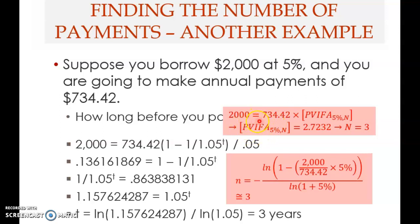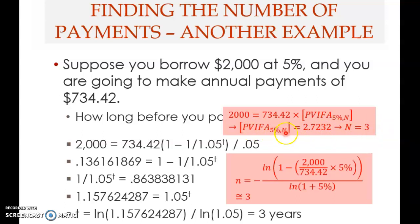In Table A3, go to the 5 percent column and look down the rows starting from N equals one. Look for the value 2.7232, and you'll find it corresponds to N equals three. The present value interest factor of annuity at 5 percent for three years equals 2.7232, so you can solve this problem using the table as well.